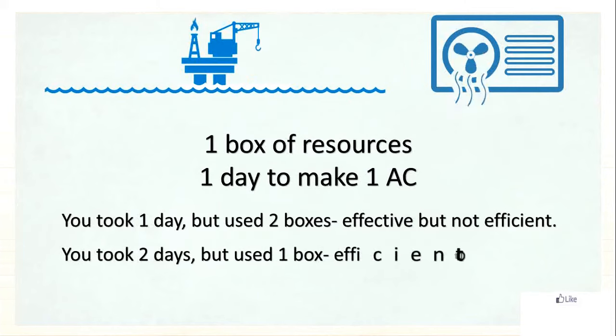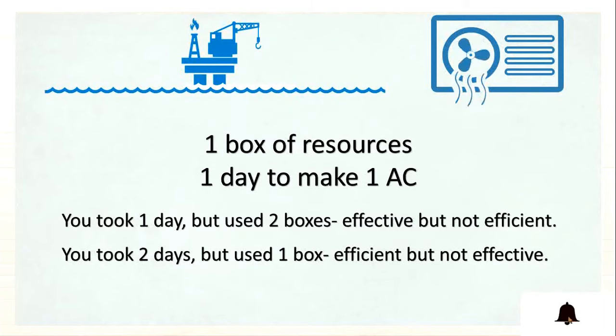The second scenario, if you took two days but used one box, at this time you have used one box so you're being efficient but not effective. How? You're being efficient because you have used one box of resources. The estimated box of use was one and estimated day or time was one day, but you have taken two days instead of one day, so that's why you're not being effective at this time. But you're being efficient because you have used just one box as it was estimated.